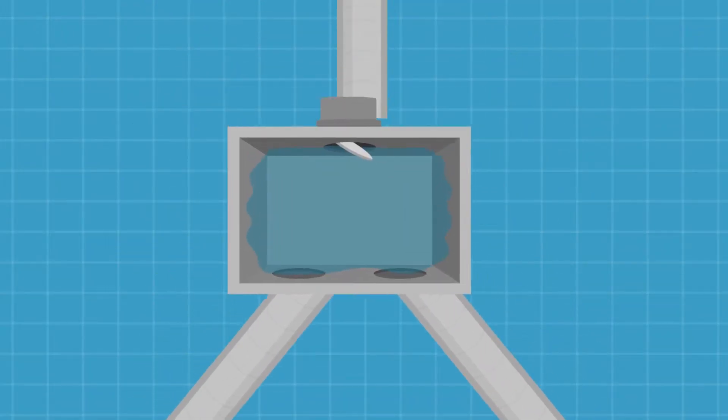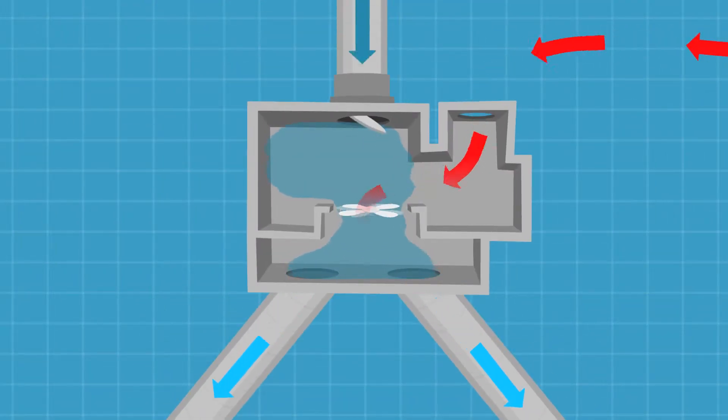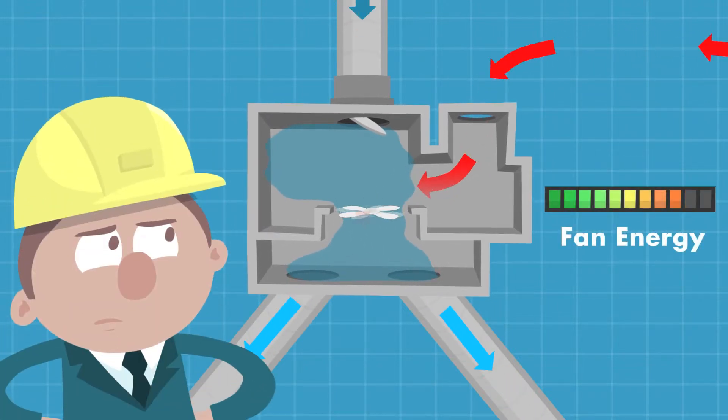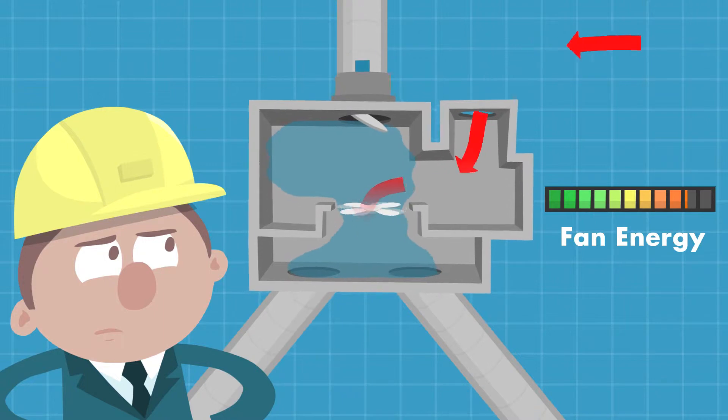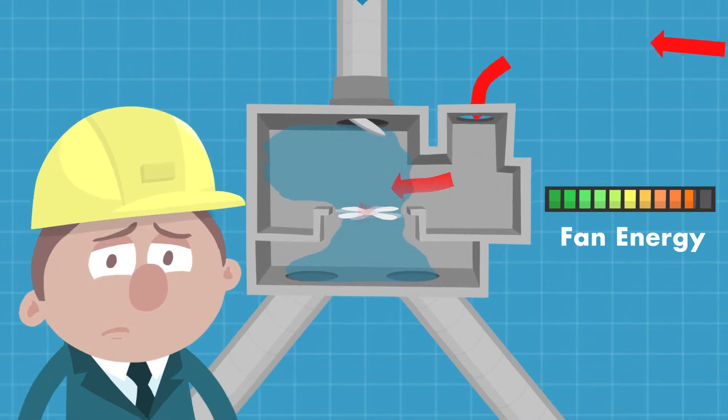The old solution is to swap the VAV boxes for fan-assisted units which mix primary air with ceiling cavity air. But now we're using noisy power-hungry fans again. Not good, right Albert?